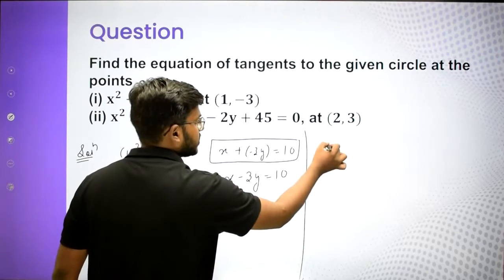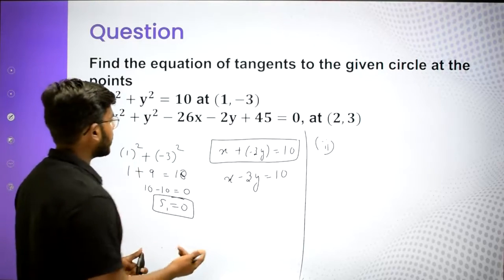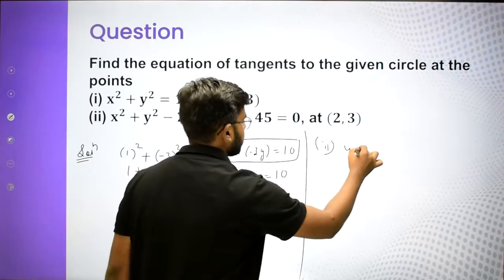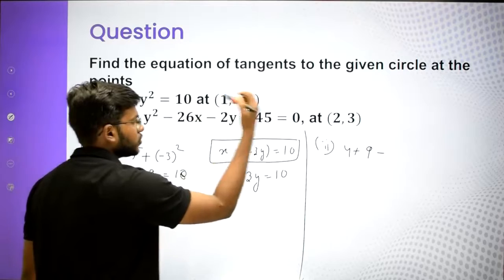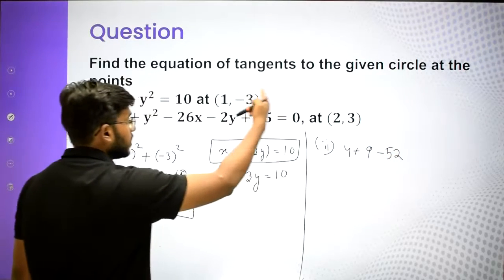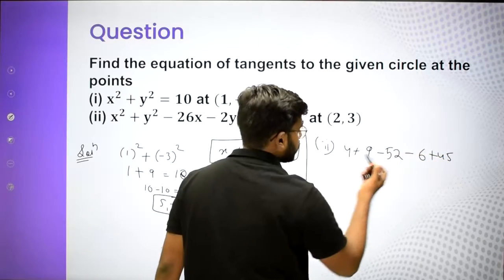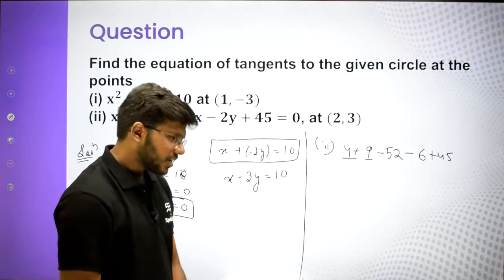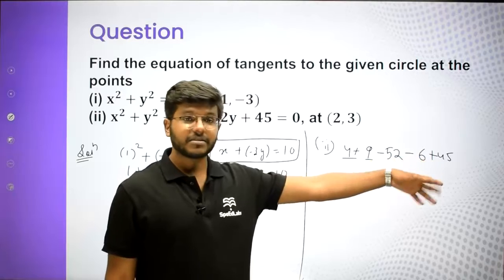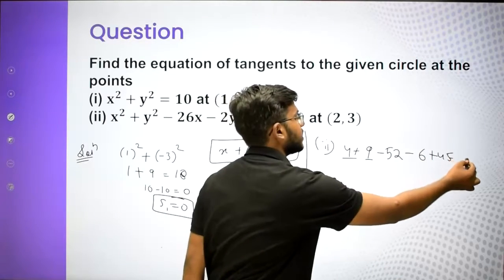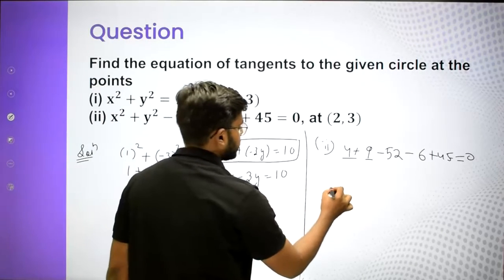For the second question, we have a general equation circle. First let's check if the point (2, 3) lies on it. Calculating: 2² + 3² - 26(2) - 2(3) + 45 = 4 + 9 - 52 - 6 + 45. So 13 + 45 = 58 and 52 + 6 = 58. Therefore 58 - 58 = 0. So S1 equals zero and this point is also lying on the circle.